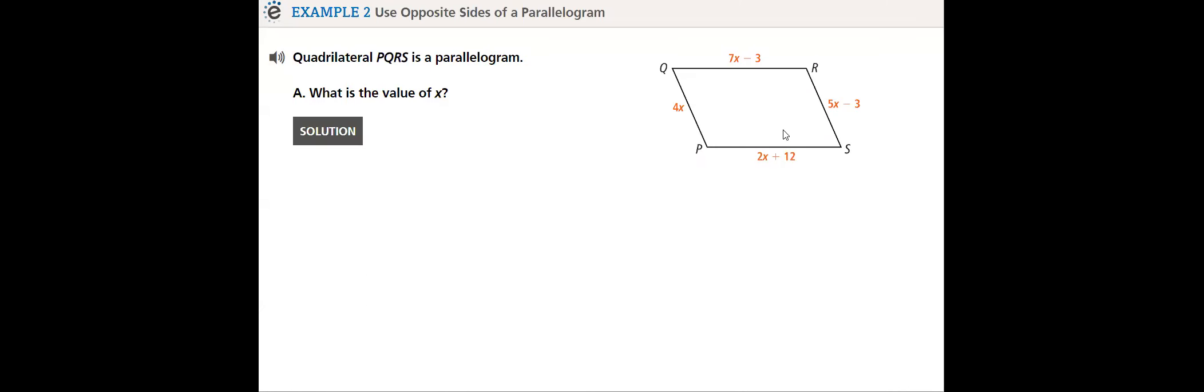Then, we will be using what we have learned in solving an example. We always like in geometry to connect it to algebra. So, what is given in this example? Quadrilateral PQRS is a parallelogram. Since I know that this is a parallelogram, which means opposite sides are congruent and parallel.